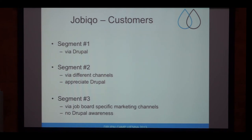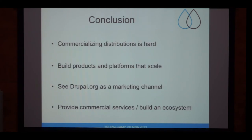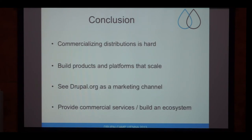This is all I wanted to say about our approach with Jopico and Recruiter. I hope I gave you an impression of how we try to tackle the main challenges. Of course, we have not solved all the issues, but at least we found a way that works for us. I hope it's also some kind of motivation for you if you're thinking about publishing a distribution. So, commercializing distributions is really still hard — but possible — as I showed with different business models and our approach.